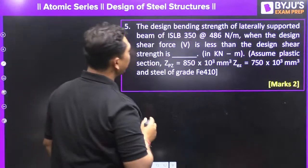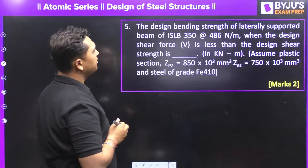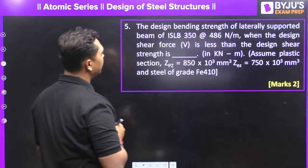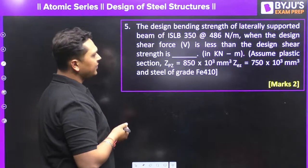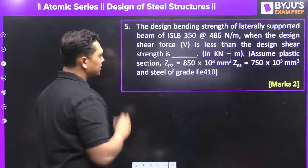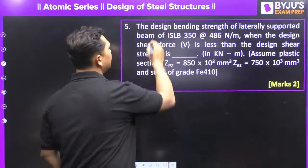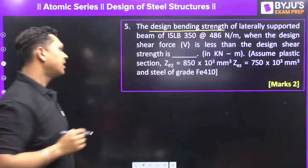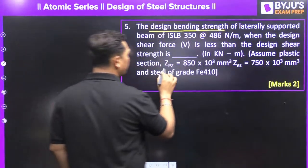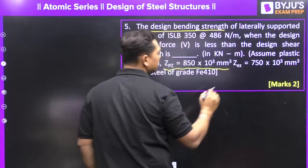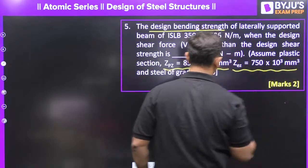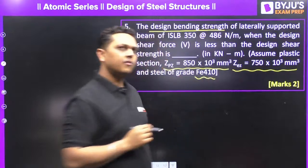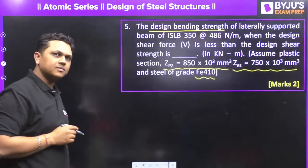Next question: the design bending strength of a laterally supported beam is LB 350 at 486 Newton per meter, where design shear force V is less than design shear strength. The plastic section modulus Zp and elastic section modulus Ze are given, and the grade of steel is Fe410.